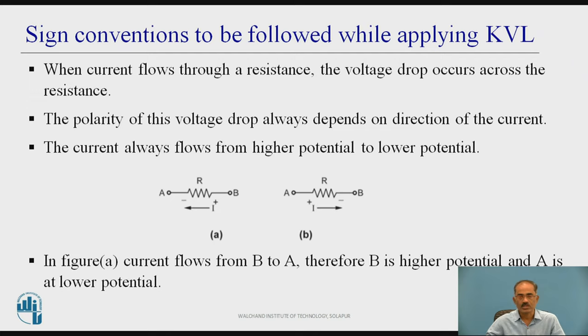Consider the figure A. The current flows from B to A. Therefore, B has higher potential than A. Similarly, in the figure B, the current flows from A to B. Therefore, A has higher potential than B. In short, we can say in resistors current will flow from plus to minus.